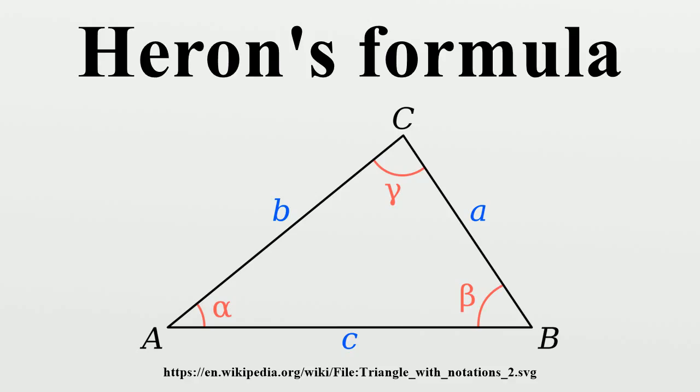The following proof is very similar to one given by Raifaizen. By the Pythagorean theorem we have b² equals h² plus d², and a² equals h² plus (c-d)². Subtracting these yields a² minus b² equals c² minus 2cd. This equation allows us to express d in terms of the sides of the triangle.